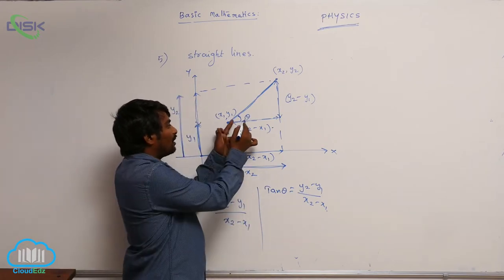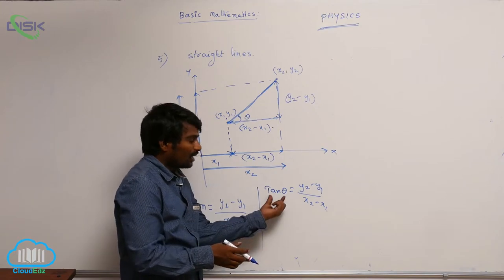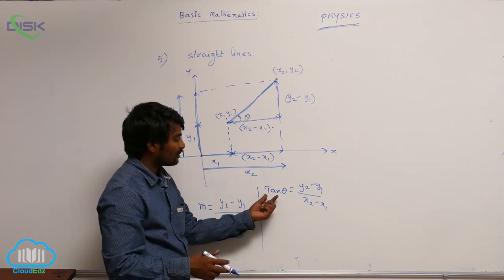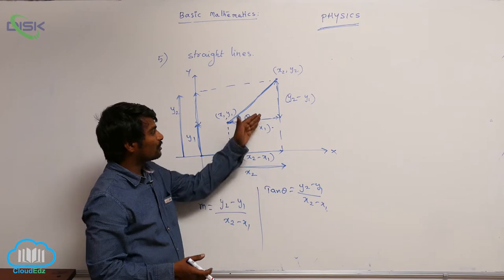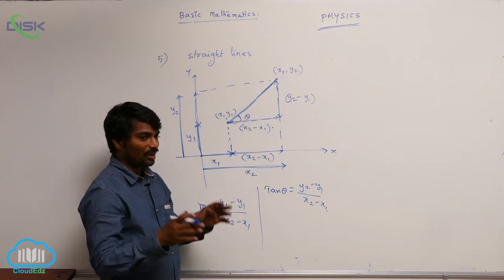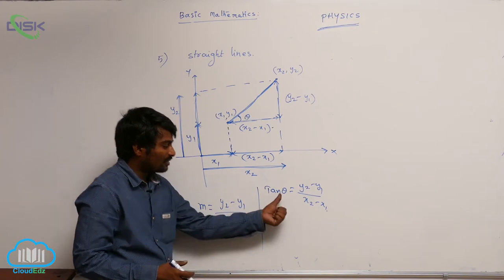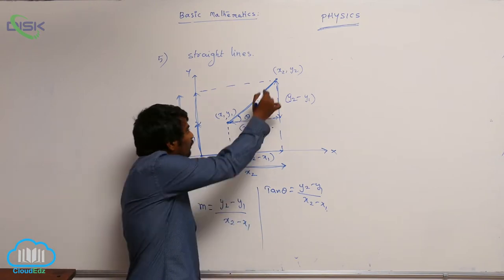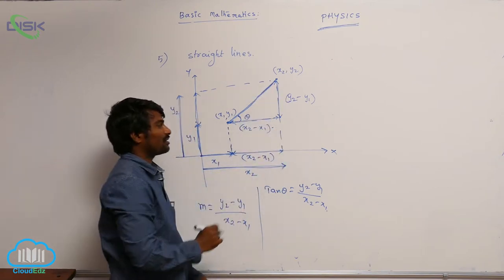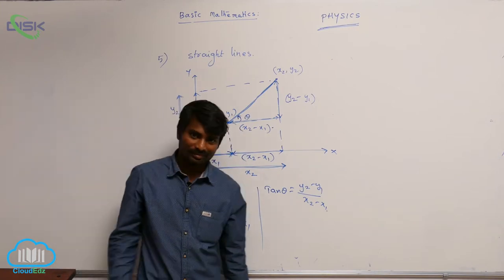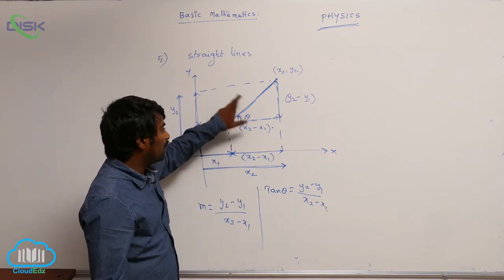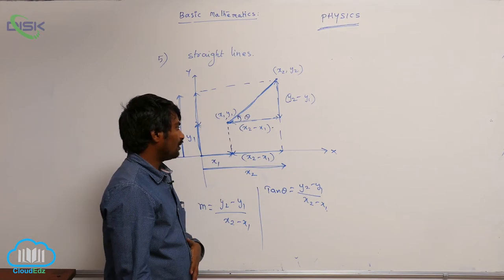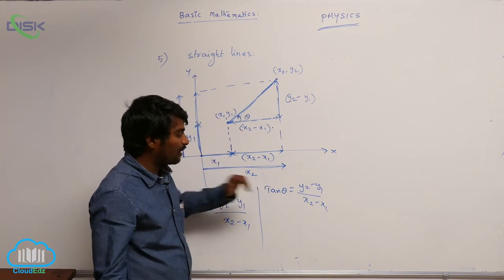Suppose if tan theta gradually increases — tan theta is an increasing function from 0 to 180 degrees — so as theta increases, tan theta also increases, and slope will increase. So from now onwards, slope means I just calculate what is the value of theta that the line makes with the positive x-axis. This angle is an anticlockwise angle — very important. The angle made by that line with the positive x-axis is theta, and tan of that angle gives you the slope.